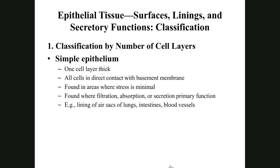We classify epithelial tissue two ways: first by cell layers, second by cell shape. For layers: simple epithelium is only one cell layer thick and is important in places where we absorb or secrete — like lungs absorbing oxygen and secreting CO2, or intestines absorbing nutrients.